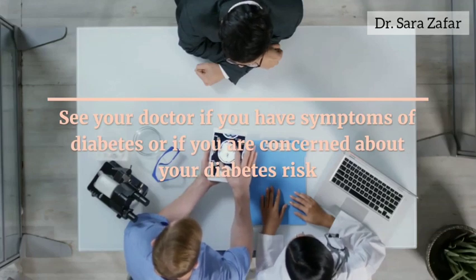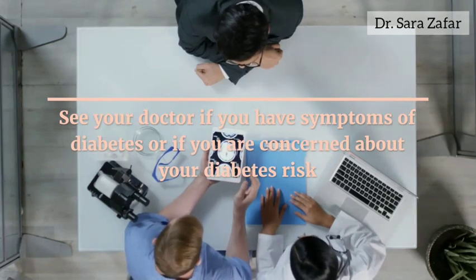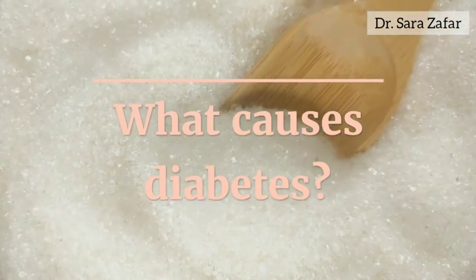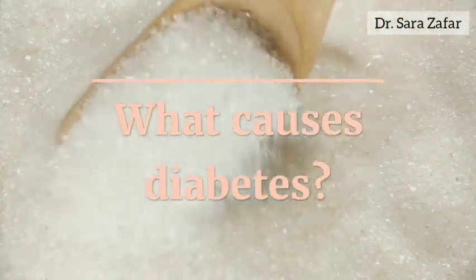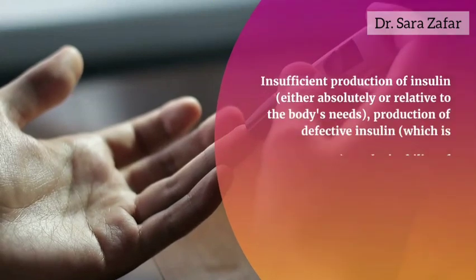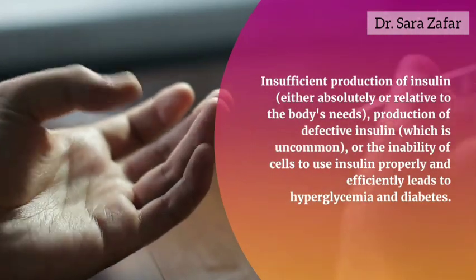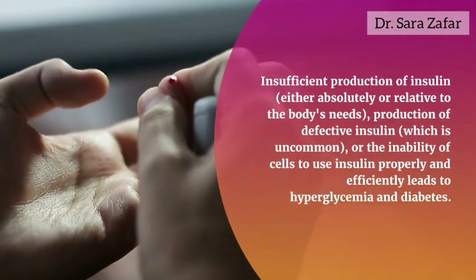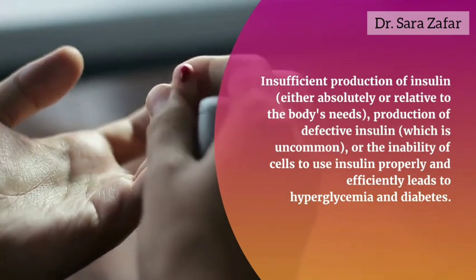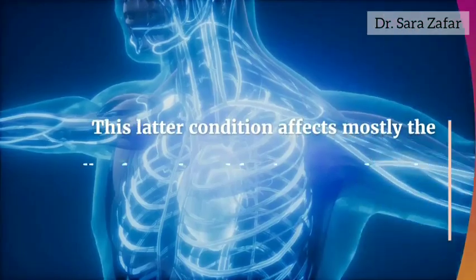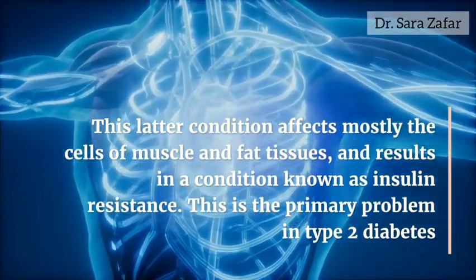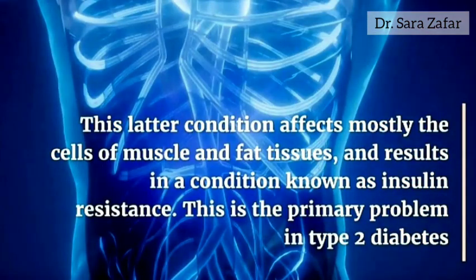See your doctor if you have symptoms of diabetes. Insufficient production of insulin, production of defective insulin, or the inability of cells to use insulin properly and efficiently leads to hyperglycemia or diabetes. This condition later affects mostly the muscle cells and fat tissues and results in a condition known as insulin resistance, which is the primary problem in type 2 diabetes.